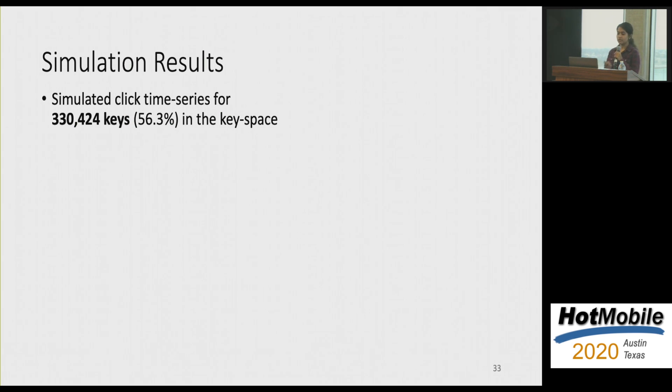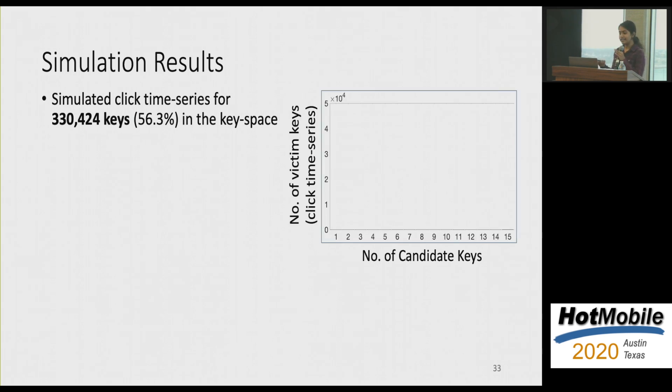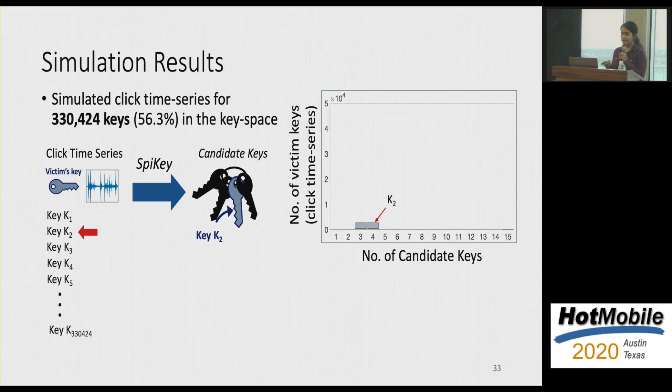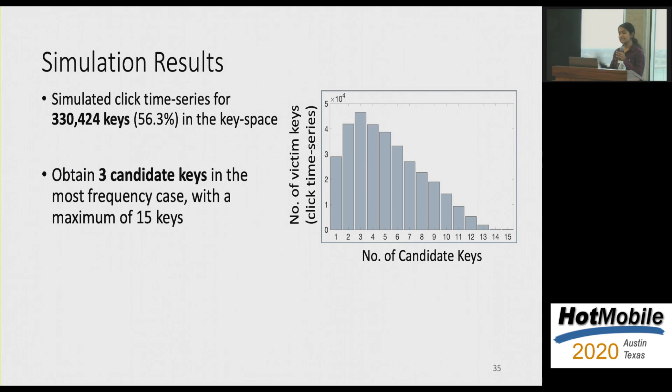So now we go on to the simulation results where we perform this for 330,424 keys, which is actually 56.3% of the total key space. So what we ideally desire is the number of candidate keys we get for the different input keys. So for each of these keys, you can imagine as a particular key k1 is being inserted, on collecting the audio recording and passing it to SpiKey, you get three candidate keys. So similarly for k2, you might get four candidate keys. For k3, you get three candidate keys and so on. You find for all possible 330,000 keys in the key space. And what is interesting here is that the maximum number of keys you can get for any possible key insertion is just 15 keys. And the most frequent case, you get just three candidate keys. So if you think about this, some of us might already have three keys in our key bunch. And if an attacker is just getting three candidate keys, you can imagine how scary such an attack could be.